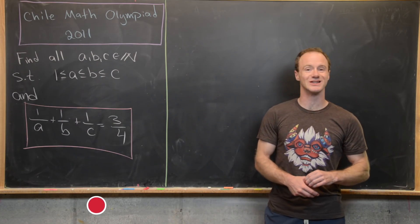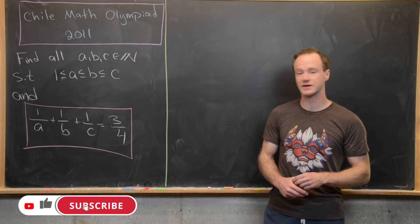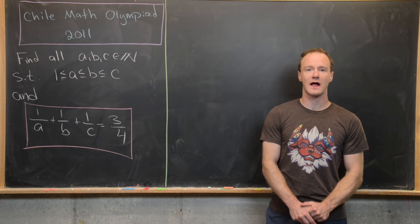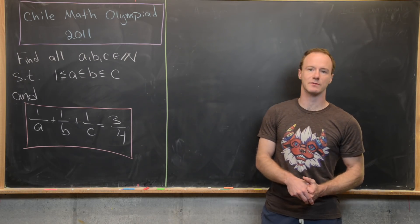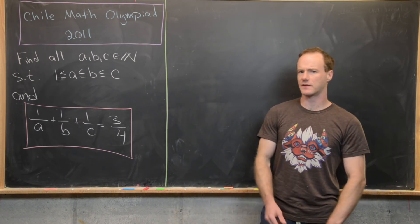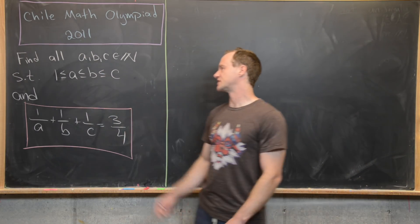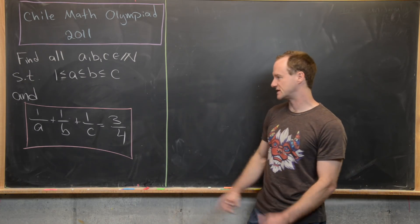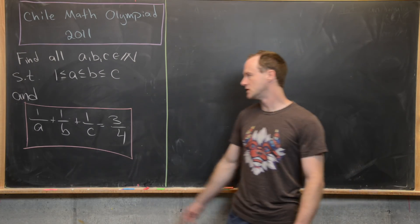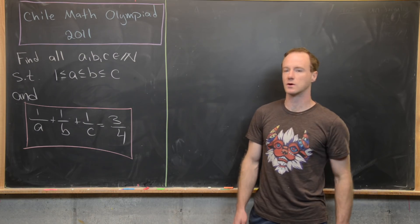Here we're going to look at a nice problem from the Chilean Mathematical Olympiad, from the 2011 edition. It's a number theory problem where we want to find all A, B, and C which are natural numbers, ordered so that 1 ≤ A ≤ B ≤ C, such that 1/A + 1/B + 1/C = 3/4.